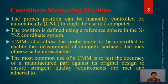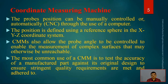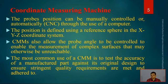With computer vision, the machine can measure complex surfaces that may otherwise be inaccessible — that is the beauty of CMM. The most common use of CMM is to test the accuracy of a manufactured part against the original design to ensure stringent quality requirements are met. These quality requirements are specified by the designers, who decide the specifications and what level of accuracy and precision is required. CMM discovers those measured dimensions and determines whether the stipulations are appropriately honored or not.